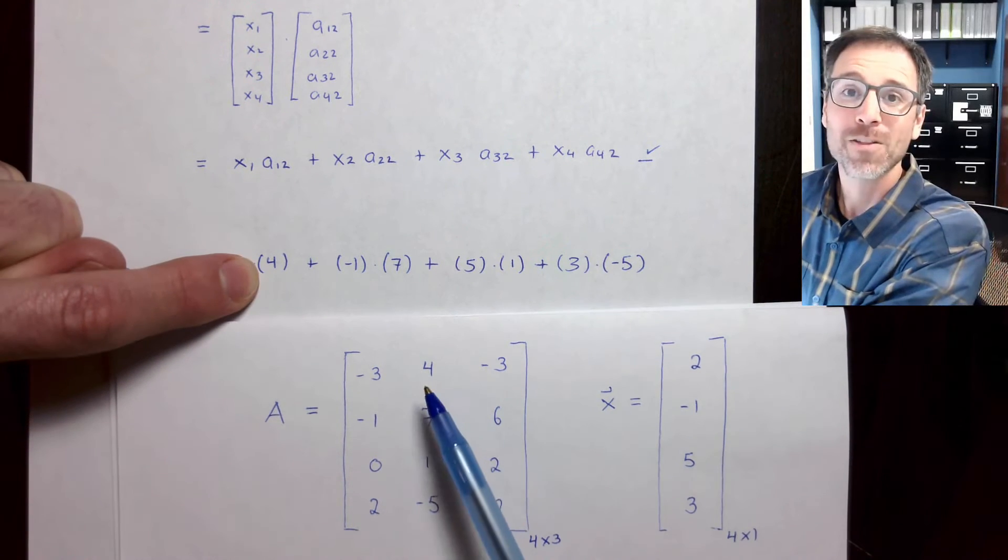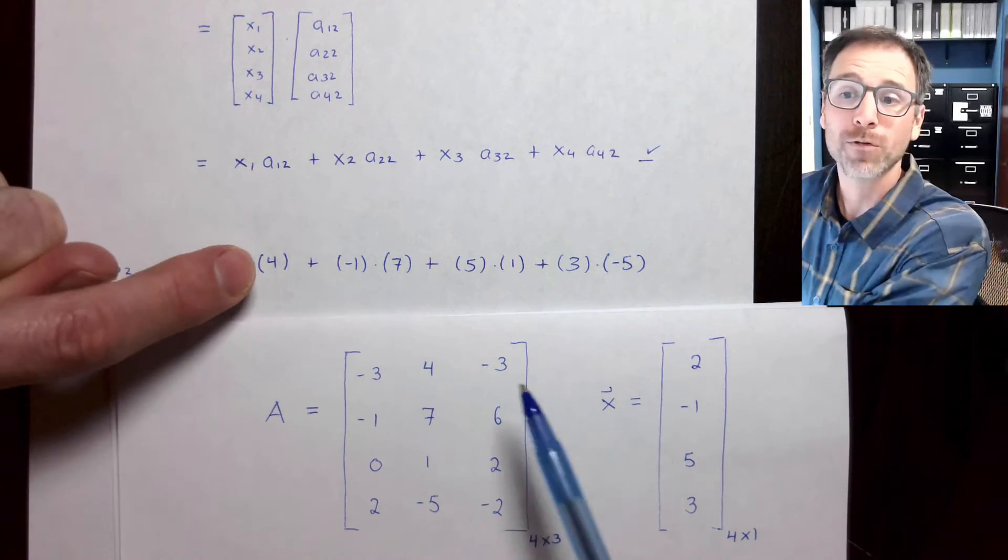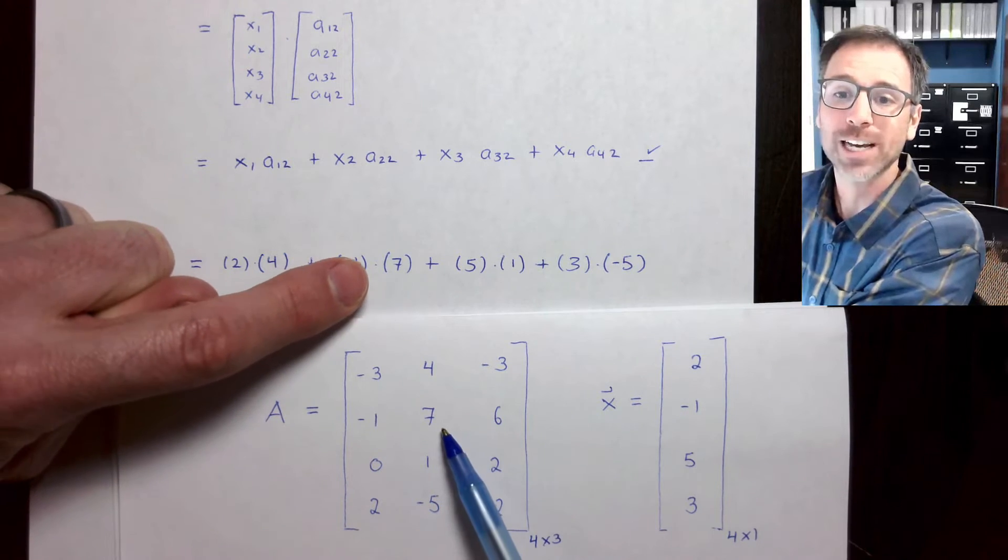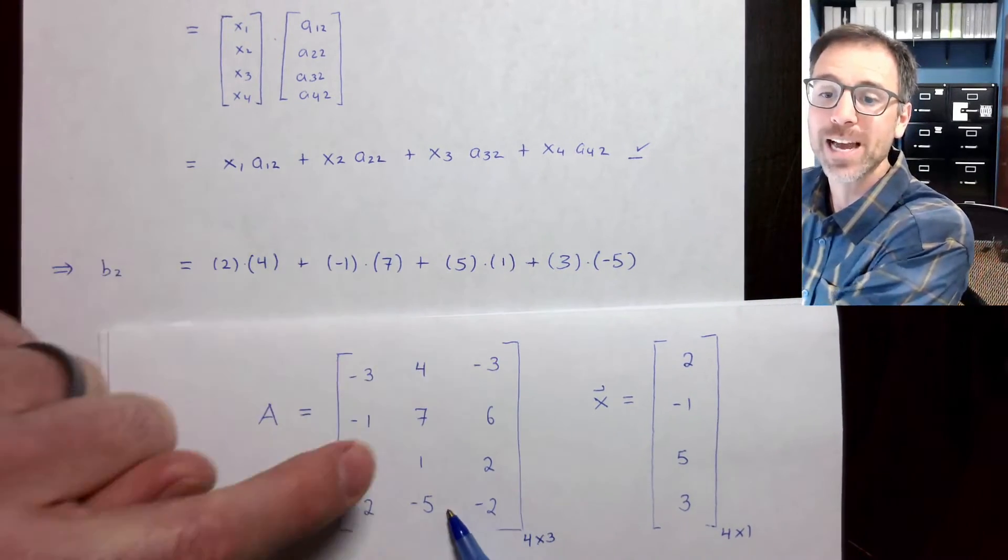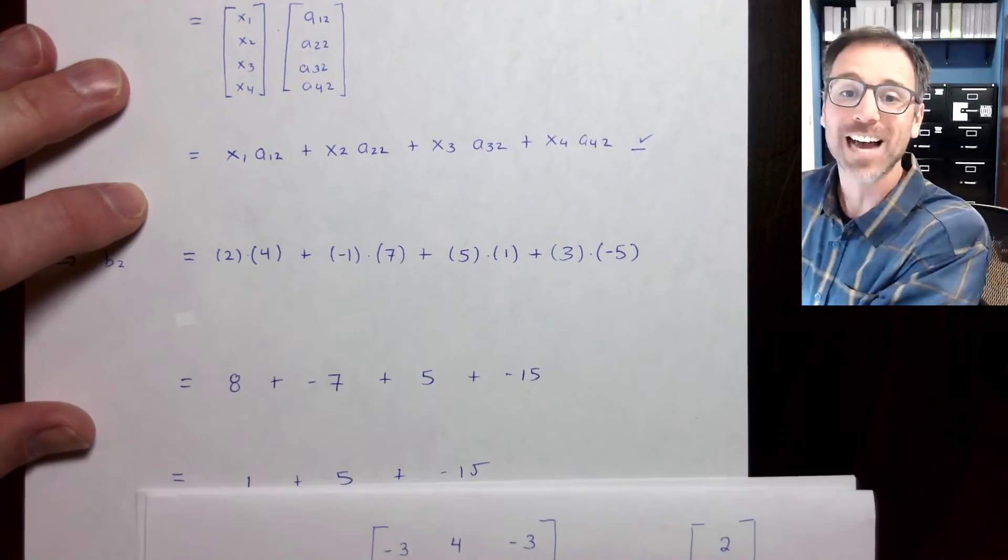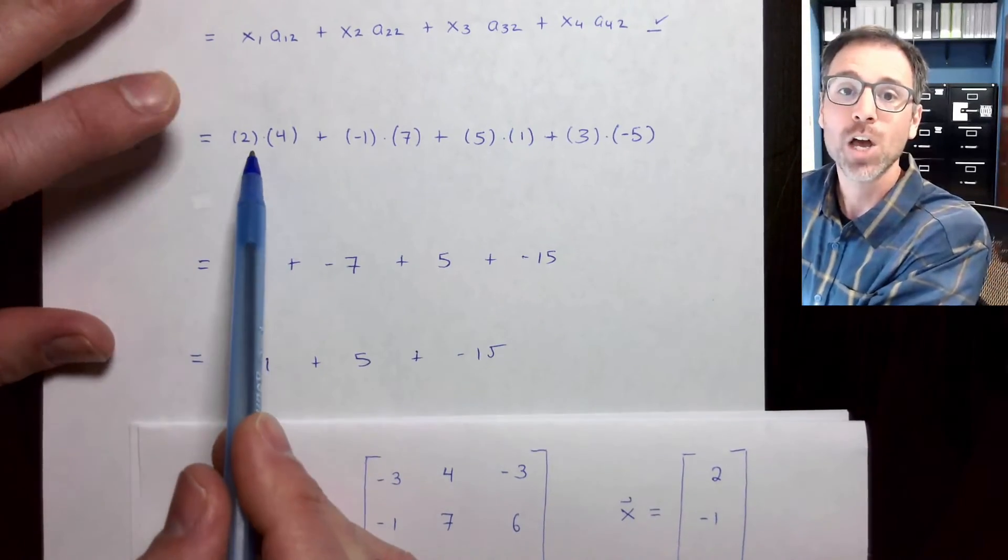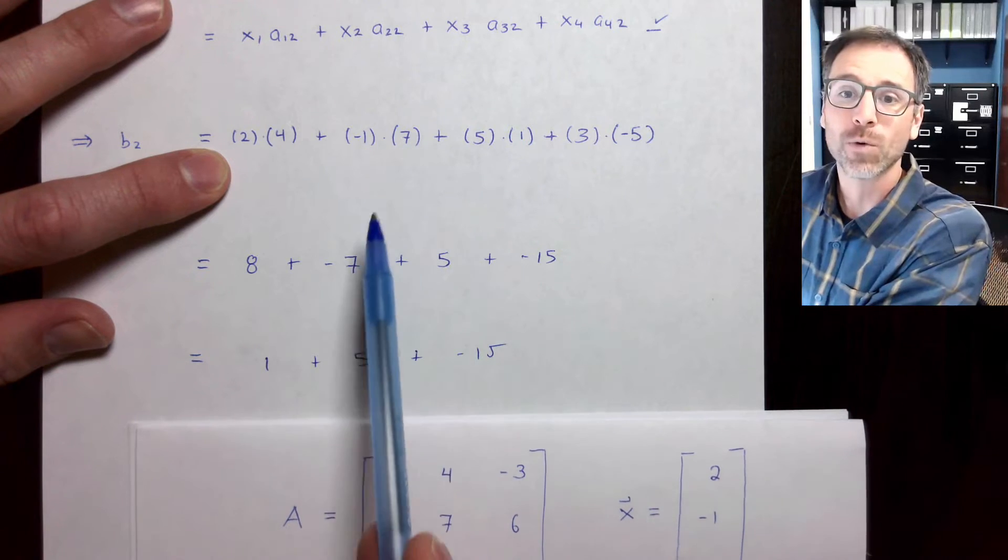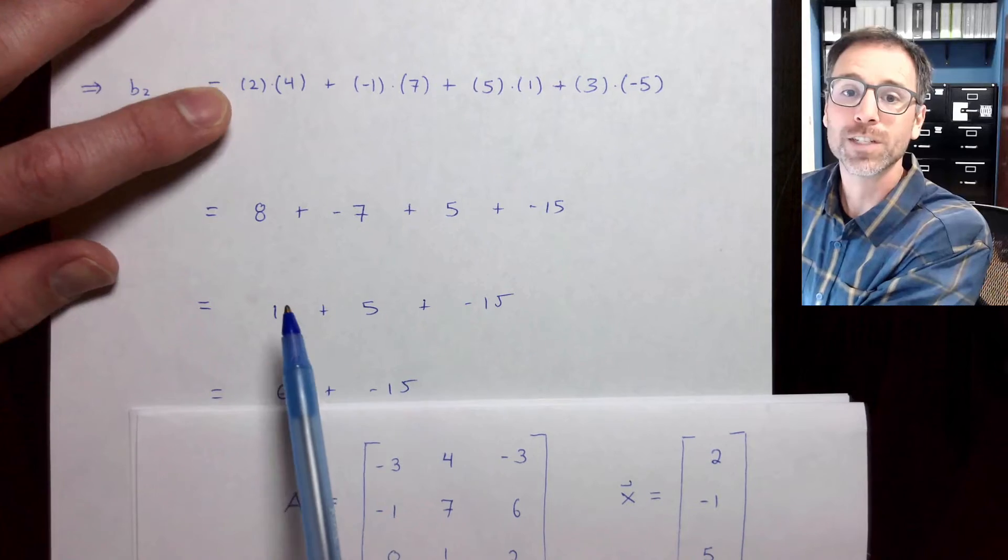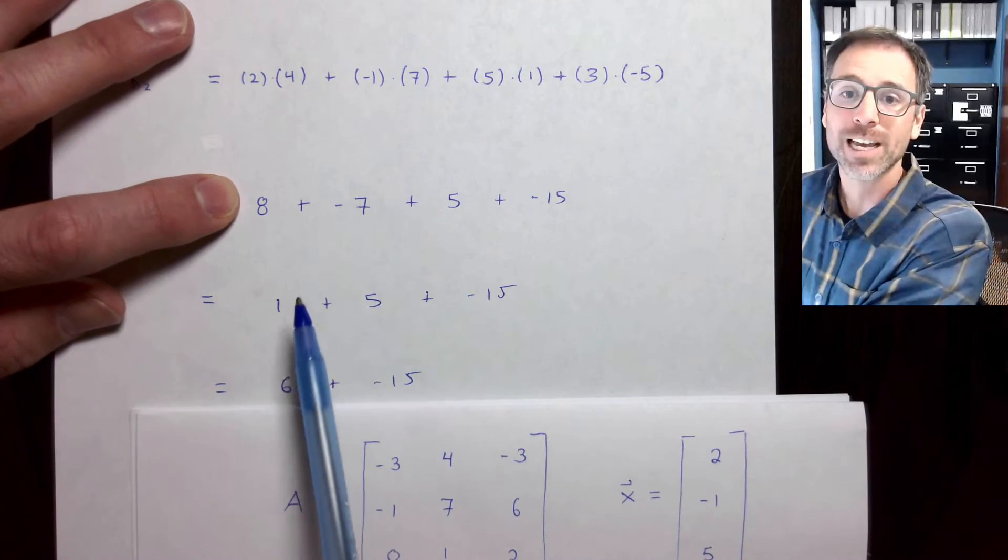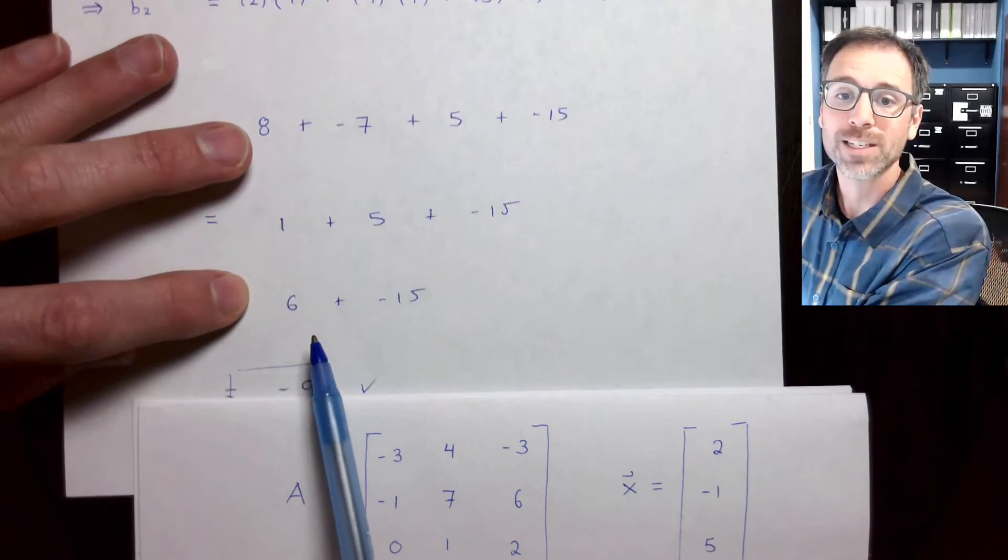Now, we do the simple process of substituting the actual values from our example into the general form. So I know that x1 is going to be 2. The first entry of column 2 is going to be 4. Then I add that to negative 1 times 7. Then I add that to 5 times 1. Then I add that to 3 times negative 5. And I do each of those calculations individually. 2 times 4 is 8. Negative 1 times 7 is negative 7. 5 times 1 is 5. 3 times negative 5 is negative 15.